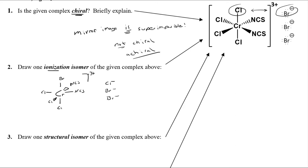Don't forget to put a charge on the complex — that's really important. Also, when drawing your ligands, make sure the bond is drawn correctly. There are no lone pairs on the carbon of NCS, so it can't bond through carbon. Your only choices are binding through nitrogen or sulfur. Take the time to show me what's actually bound and that you're thinking about which lone pair is coordinating.